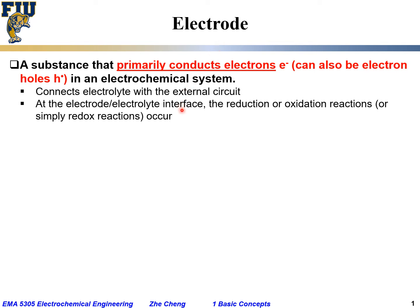Another function of the electrode is at the electrode-electrolyte interface. Remember, the electrolyte conducts ions and the electrode conducts electrons. At that interface, the reduction or oxidation reaction would occur. It is at the electrode-electrolyte interface where the so-called redox reaction — the reduction and oxidation reactions — would occur. We will talk about this more in a later section, but the reduction is happening at the so-called cathode, while the oxidation is happening at the anode.